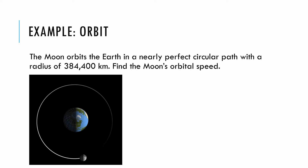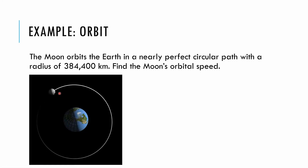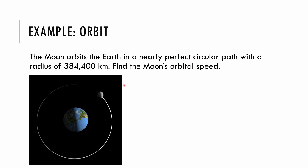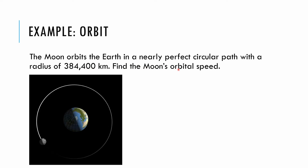Another example you'll see quite a bit is orbital motion. Orbital motion is circular motion. Most planets orbit the sun in a nearly circular path, and the moon orbits the Earth in an almost perfectly circular path. There is a radius of that path, and we can use these ideas to find the orbital speed of the moon.